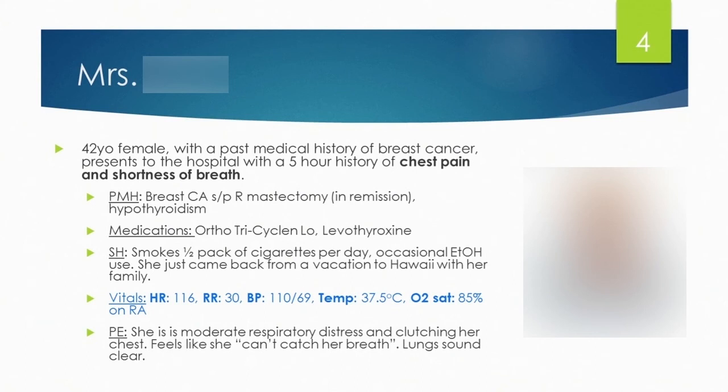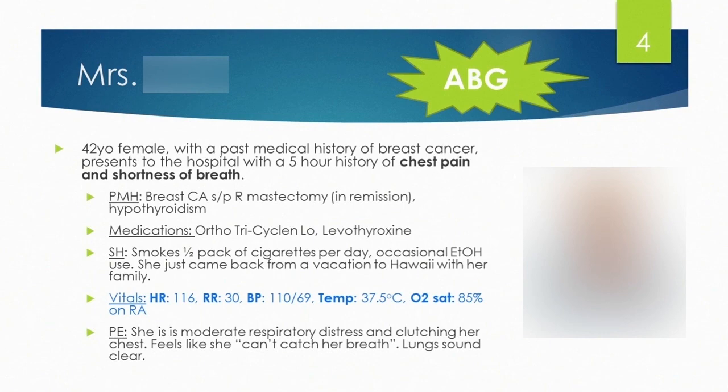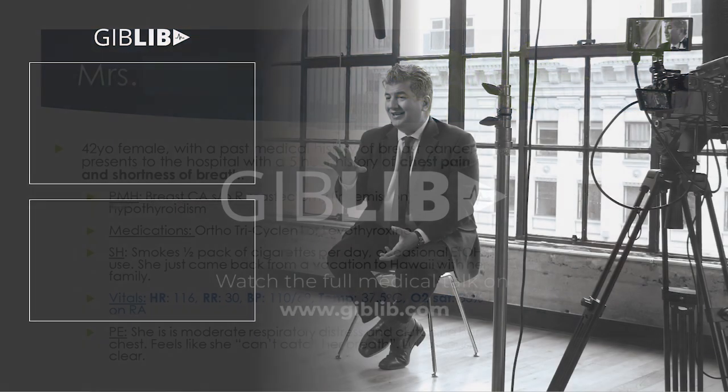PE — not trying to trick you. She has basically every risk factor there is. What are some initial tests you'd want to order for this patient? CTA right off the bat to diagnose that. Anything else? EKG, echo, ABG. For those of you looking at the slides, I do have a little hint there for you. One thing I will really emphasize throughout my talk today is the importance of getting an arterial blood gas in our patients with respiratory failure.